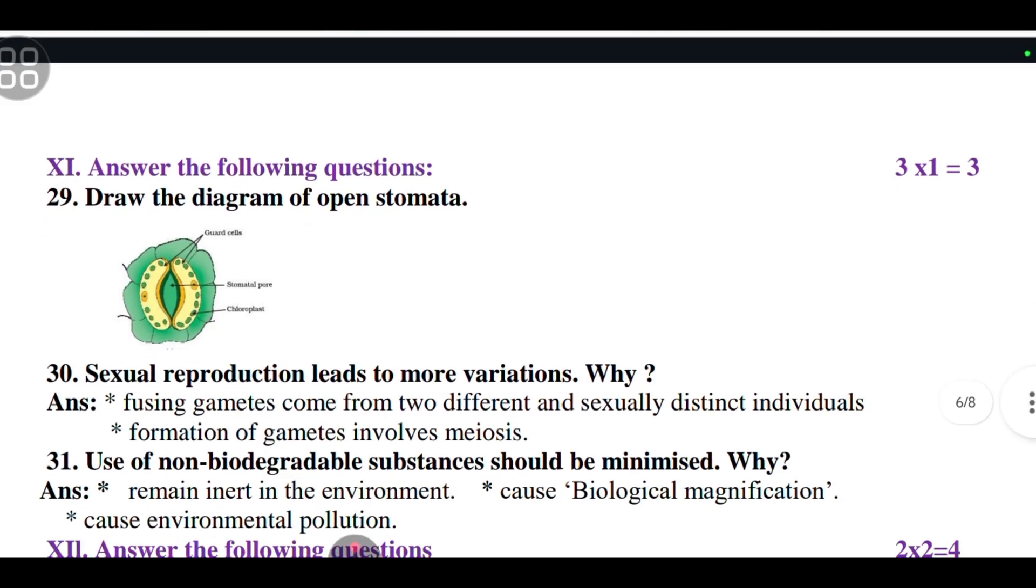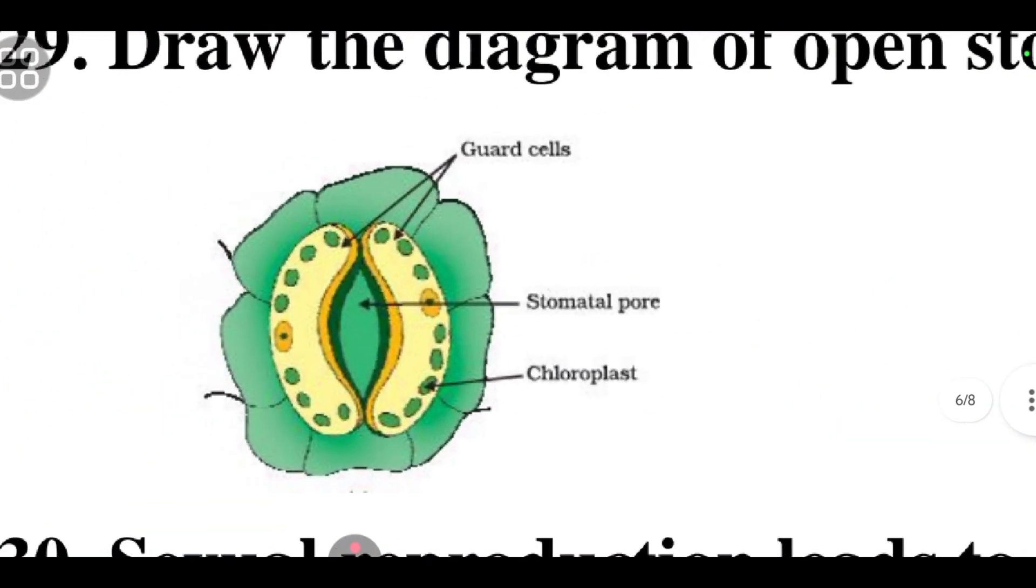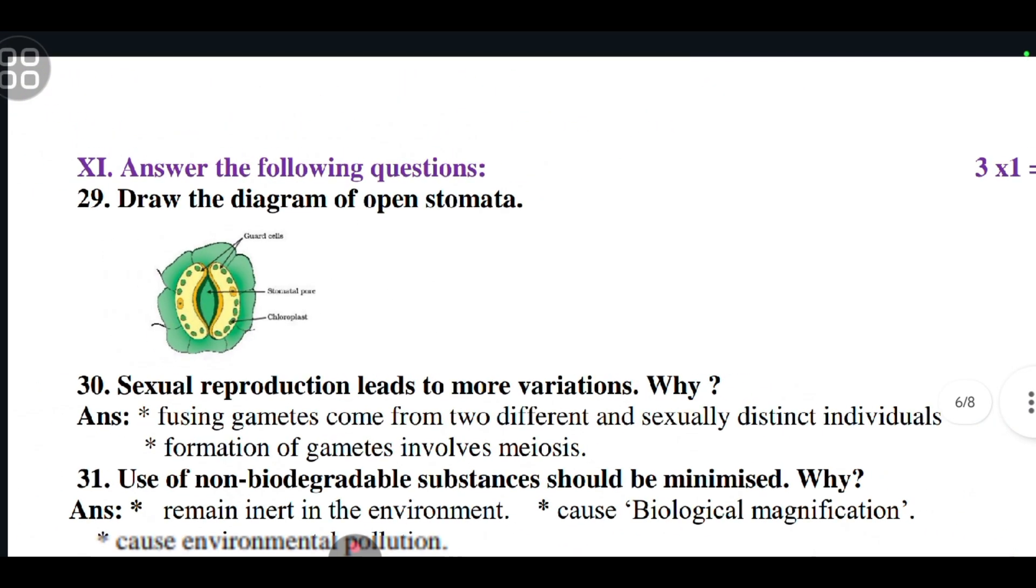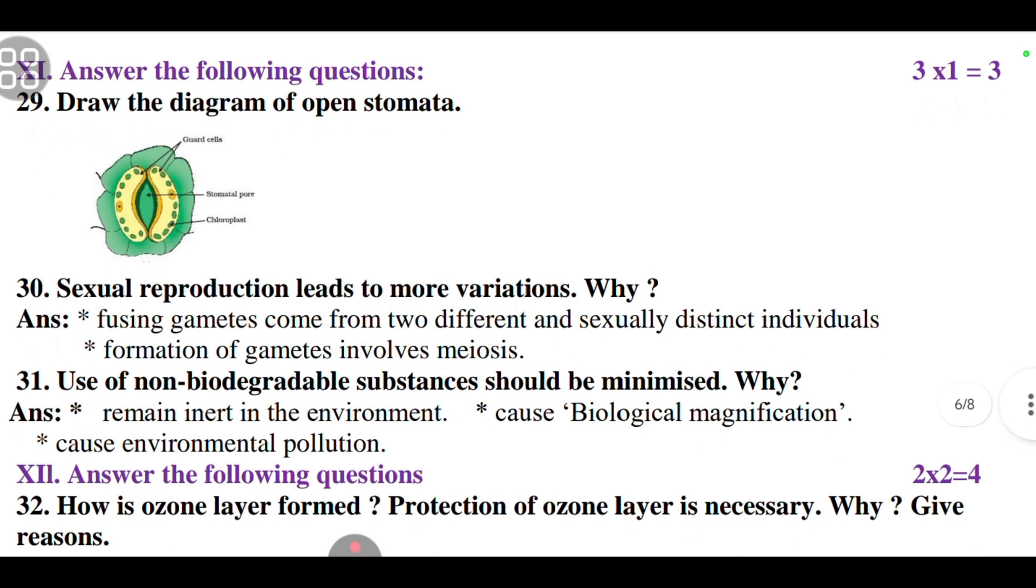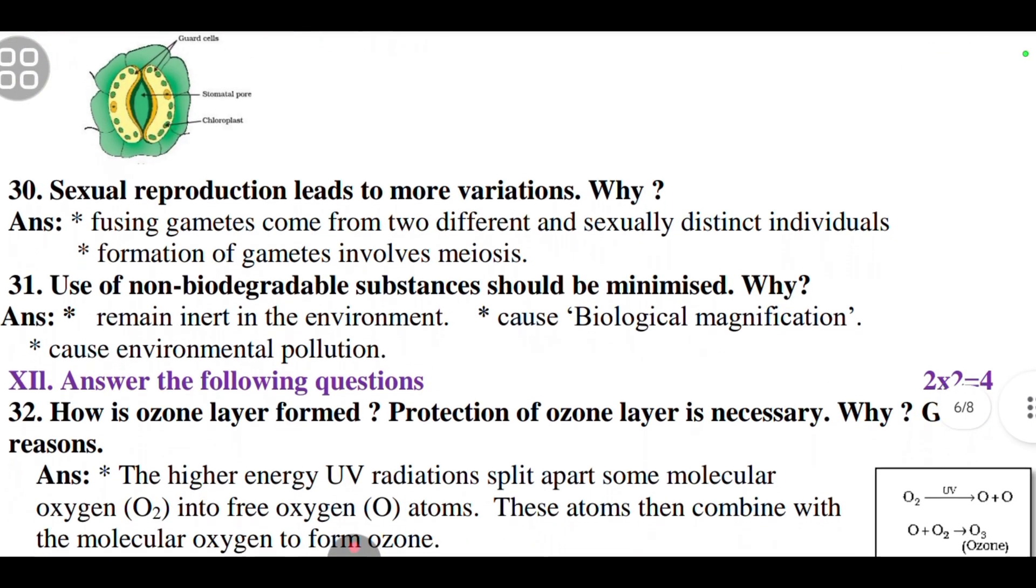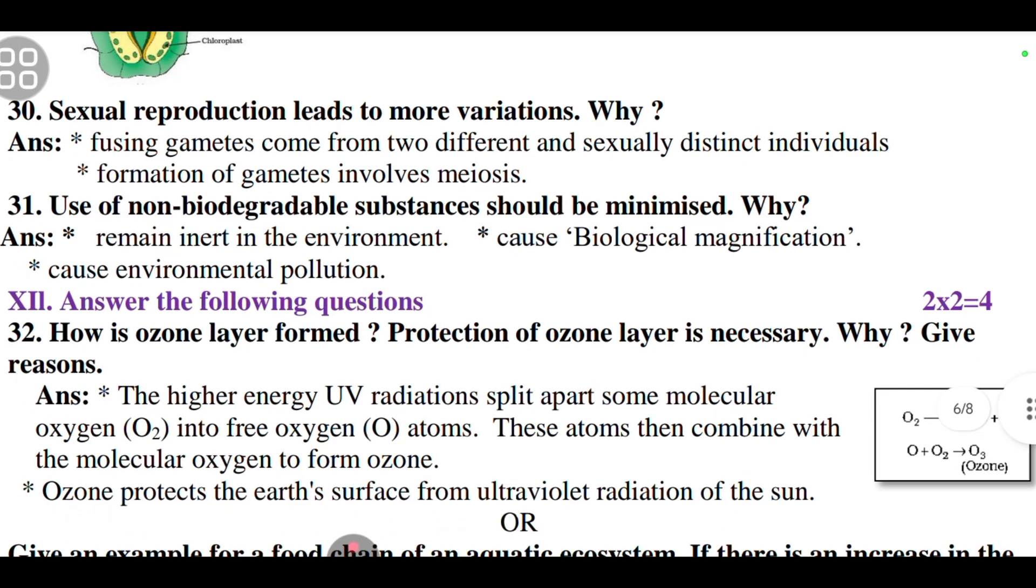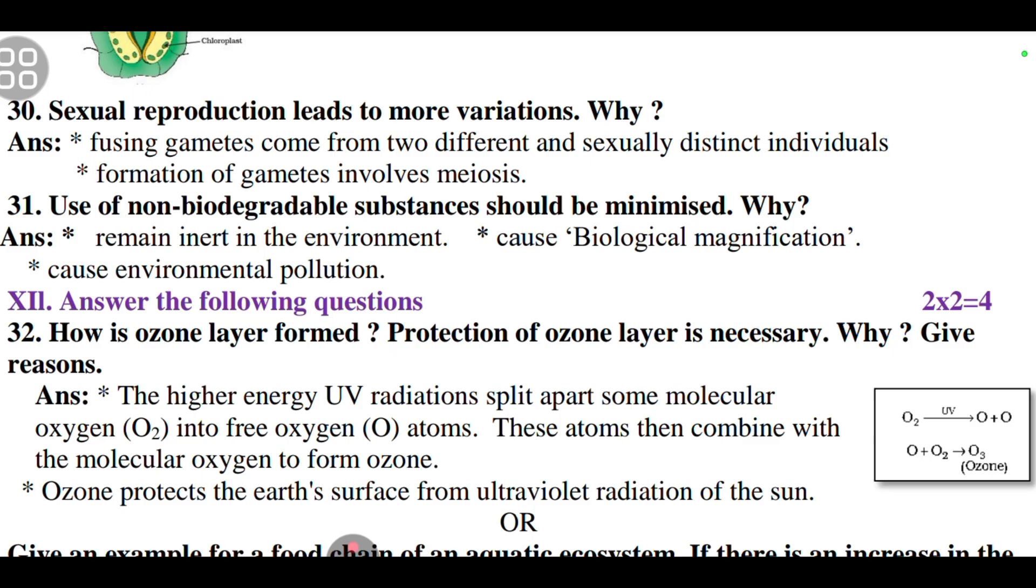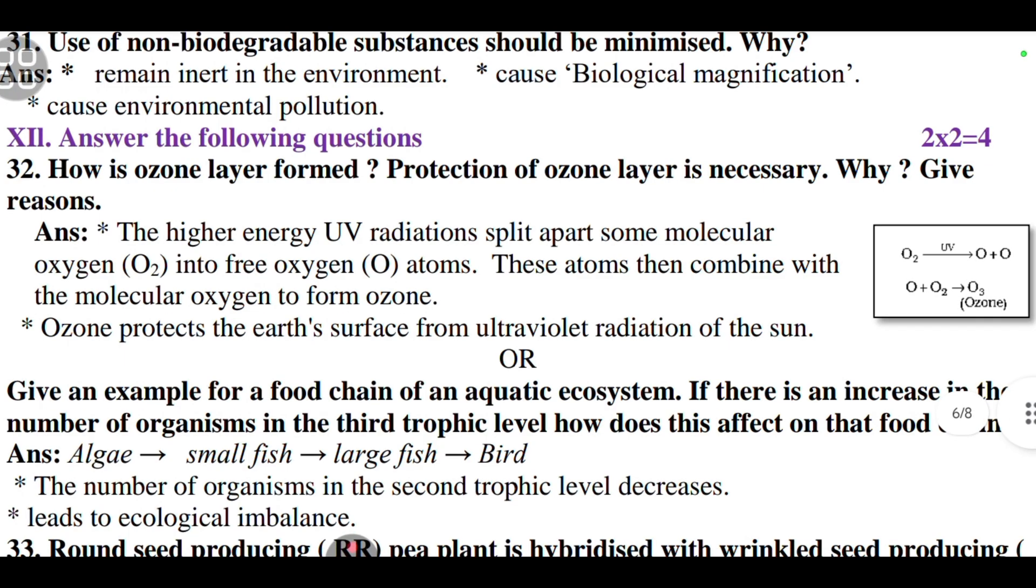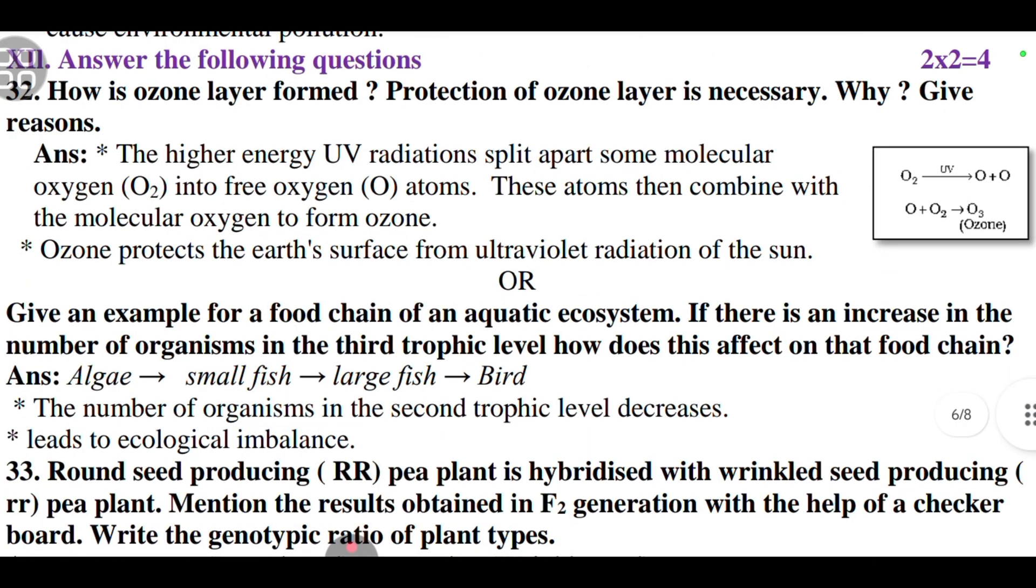The 28th question: observe the female reproductive structures given in figure A and B. The correct statement related to this figure is C option: fertilization of egg is possible only in the structure of figure A because in B, fallopian tube is blocked by surgery. This is to know the contraception methods which are at the end of the chapter in the reproduction lesson. Coming to 11th main, answer the following question. Draw the diagram of open stomata.